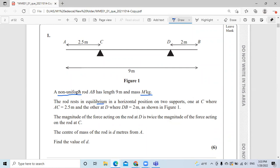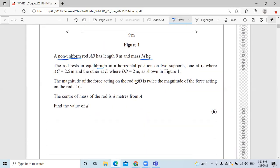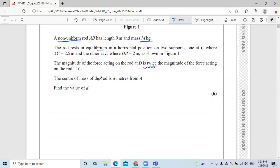One is C, as you can see, 2.5 meters far, and one at D, which where DB is 2 meters, as shown in the figure. The magnitude of the forces acting on D is twice the magnitude of the force acting on the rod at C. The center of mass of the rod is D meters away from A. Find the value of D.